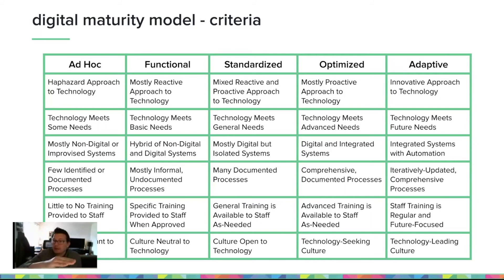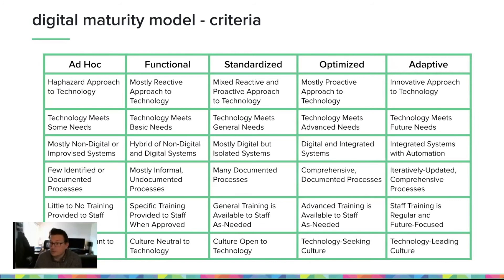When talking about the rows, there are actually six rows. They represent people, process, and technology, but in reverse. The top three rows are technology: we have a technology approach, the state of technology, and data systems. The next row is processes, which are the process practices. And then people are the bottom two rows — those are skills training and technology culture.